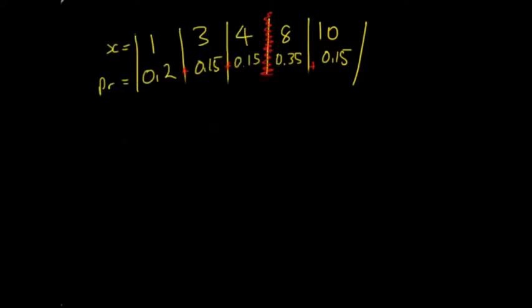Looking at these values, you have 1 at 0.2 (20%), 3 at 15%, 4 at 15%, 8 at 35%, 10 at 15%. You find the one with the highest probability, which is 8 because that's 0.35. Most of the time 8 will occur. It's the most common outcome. The mode equals 8.